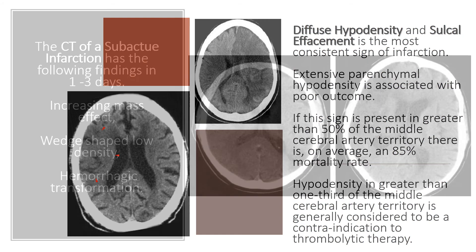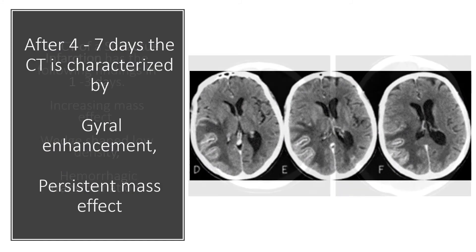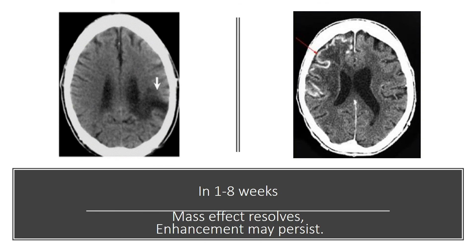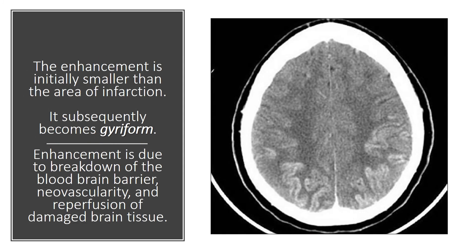The CT of a subacute infarction has the following findings: in one to three days, increasing mass effect, wedge-shaped low-density, and hemorrhagic transformation. After four to seven days, the CT is characterized by gyral enhancement and persistent mass effect. In one to eight weeks, mass effect resolves and enhancement may persist. Ninety percent of infarcts enhance on CT with intravenous contrast at one week after the infarct; approximately 35% enhance by three days. Faint enhancement begins near the pial surface or near the infarct margins and subsequently becomes gyral in form. Enhancement is due to breakdown of the blood-brain barrier, neovascularity, and reperfusion of damaged brain tissue.